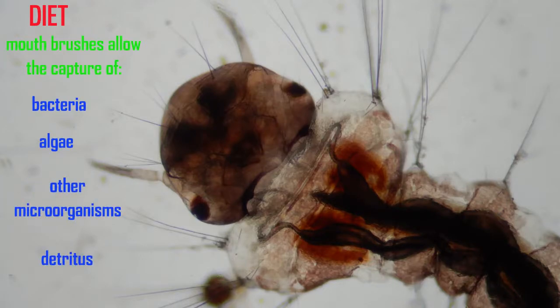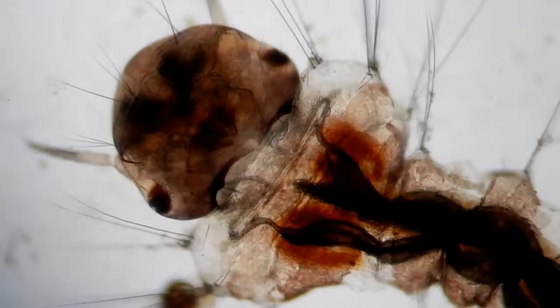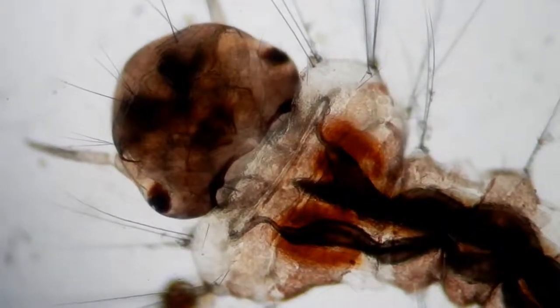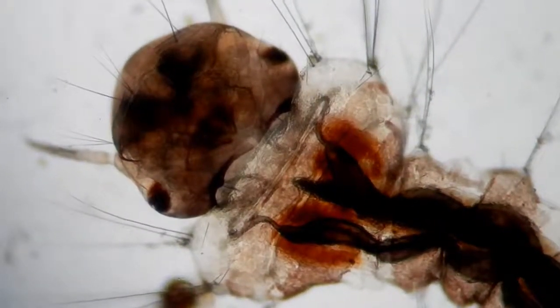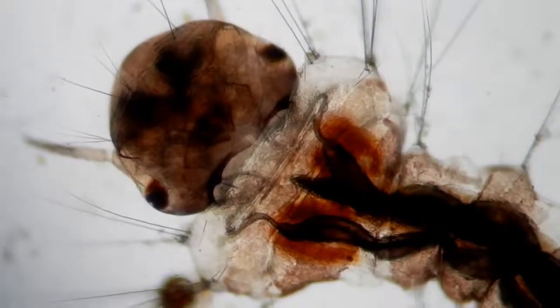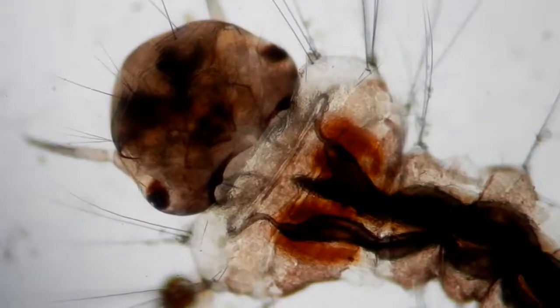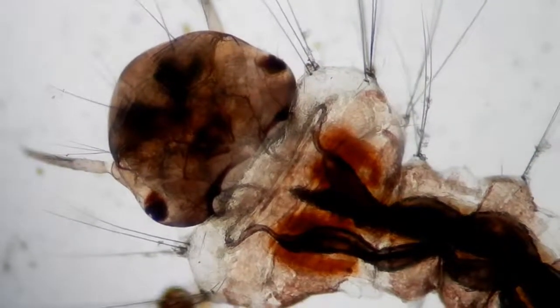Although the larvae can wriggle and swim away from the surface to return when they need to breathe, or they may hang suspended with the siphon remaining above the water.